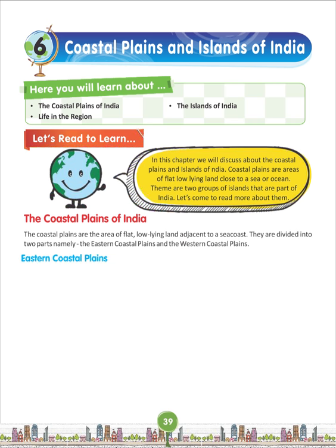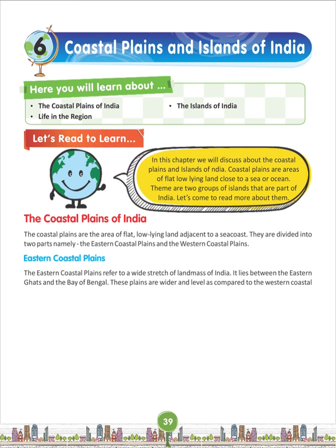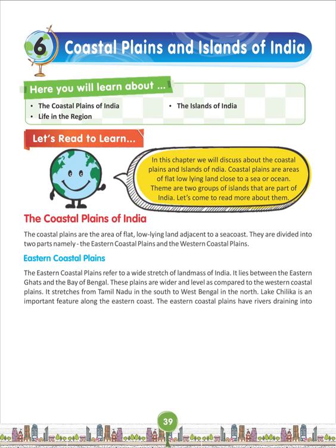The Eastern Coastal Plains refer to a wide stretch of landmass of India. It lies between the Eastern Ghats and the Bay of Bengal. These plains are wider and level as compared to the western coastal plains. It stretches from Tamil Nadu in the south to West Bengal in the north. Lake Chilka is an important feature along the eastern coast.